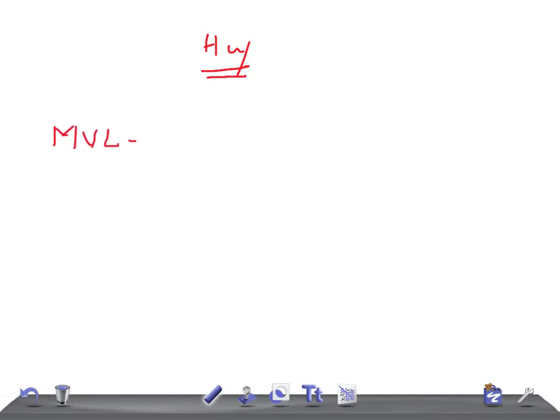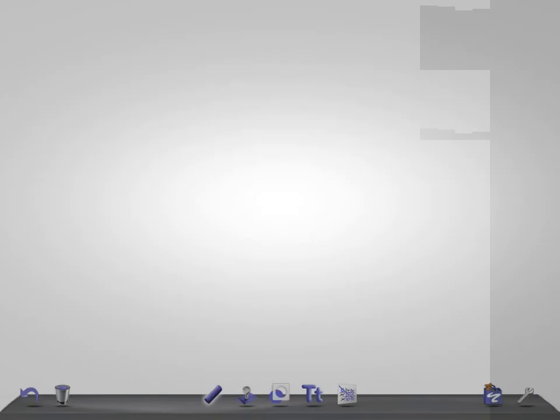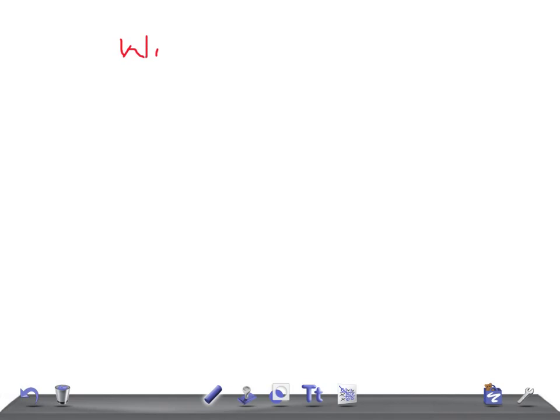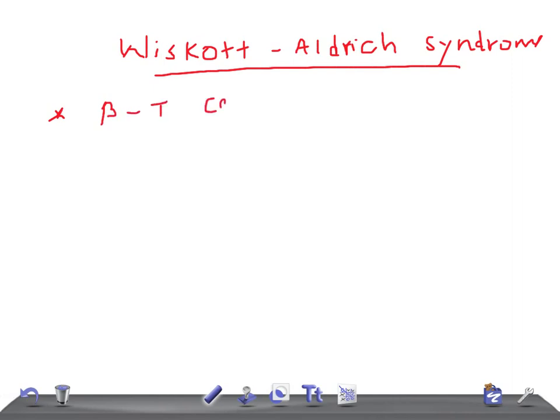This is a medical video lecture on pediatrics. Today I'm going to talk about Wiskott-Aldrich syndrome, or WAS. Wiskott-Aldrich syndrome is one example of a combined immunodeficiency, meaning it affects both B and T cells.